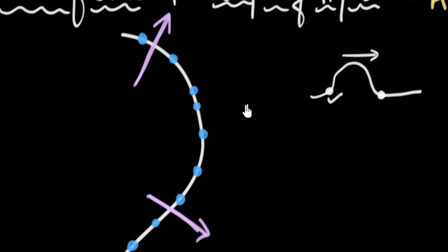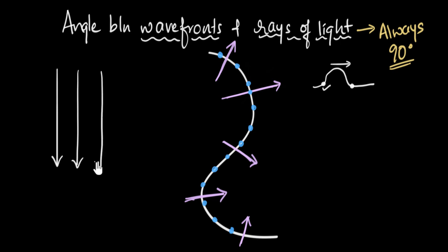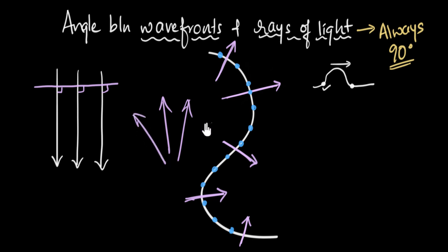The only allowed component of the direction is perpendicular — and that's why rays of light must always be perpendicular to wavefronts. This is super useful: if someone tells me rays of light are going in a certain direction and asks what the wavefront looks like, I can draw the wavefront perpendicular to those rays. Similarly, given a wavefront shape, I can draw rays perpendicular to it at every point.